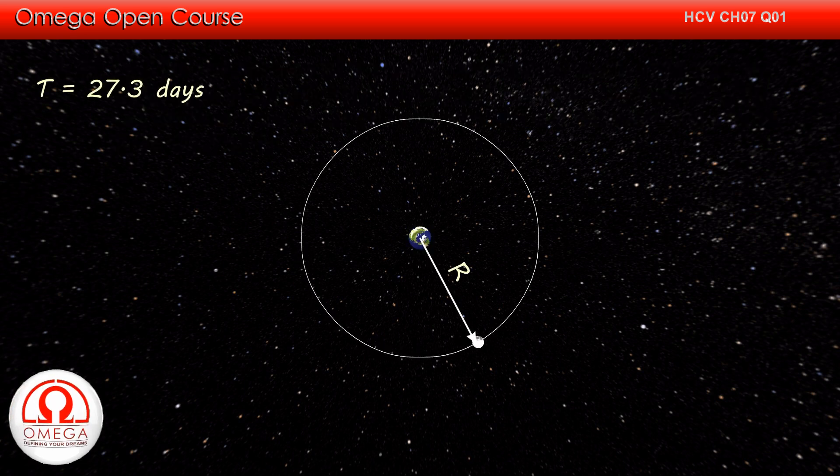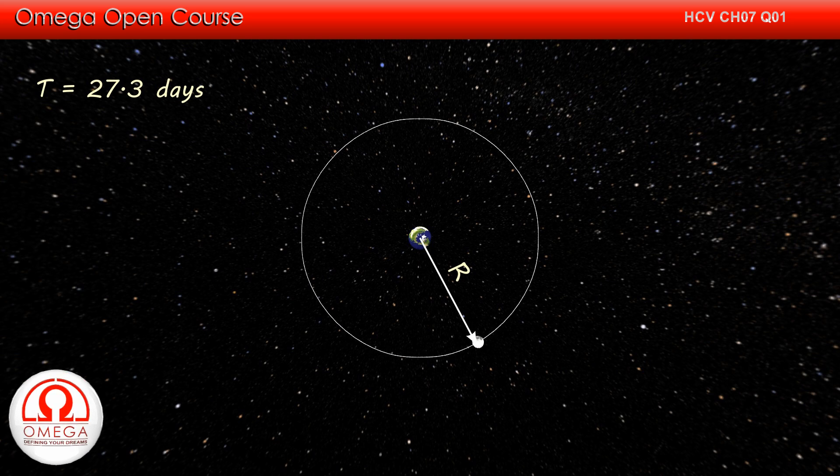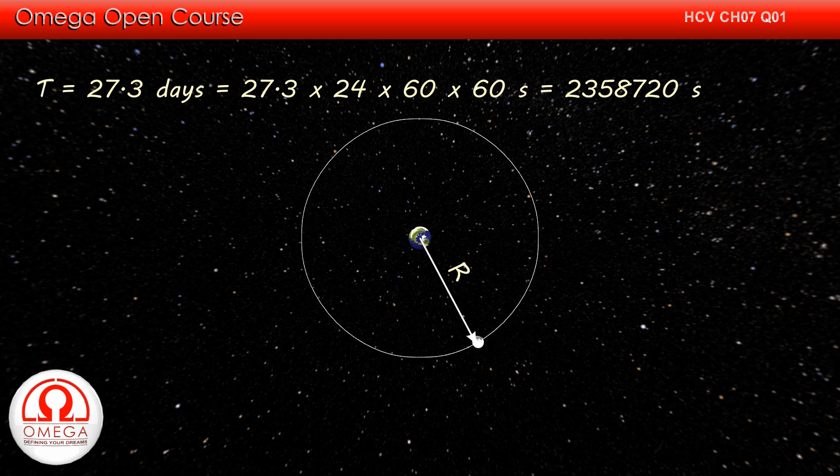The time taken is 27.3 days which is equal to 27.3 into 24 into 60 into 60 seconds which is equal to 23,58,720 seconds.